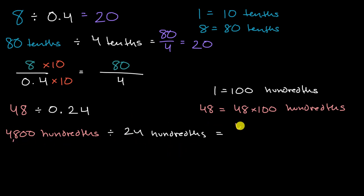So this is going to be equal to 4,800 over 24. We could express 4,800 as, of course, 48 times 100. So this is equal to 48 times 100 over 24.